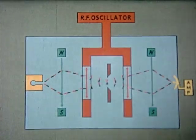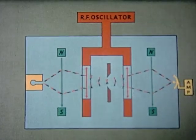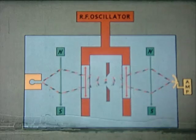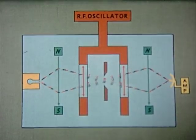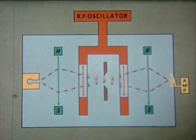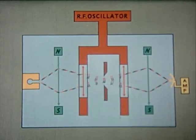They are then deflected in the opposite direction towards the detector where they are converted into an electric current and amplified. The radio frequency oscillator is thus set to the frequency of the atoms.